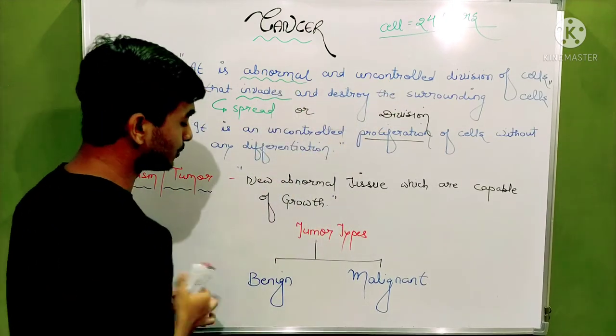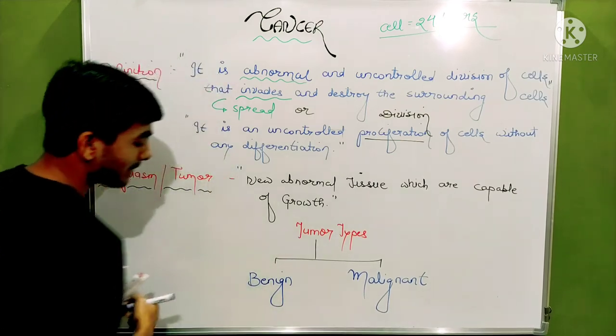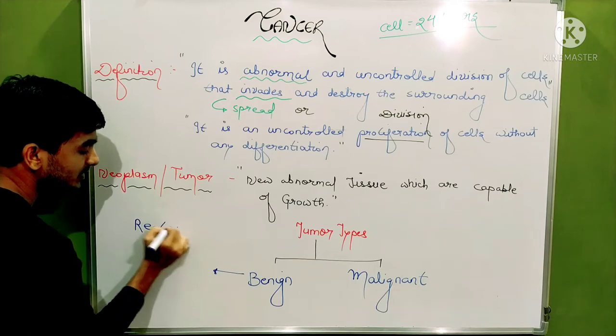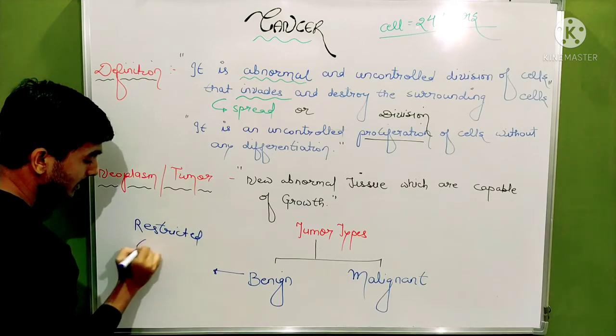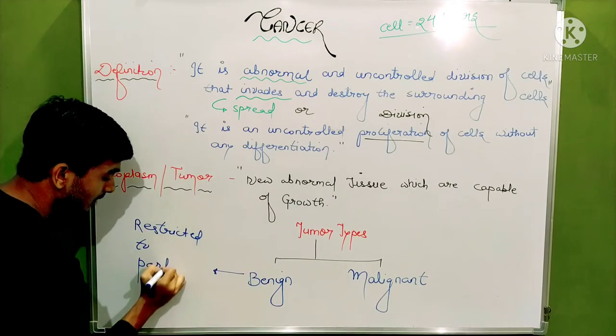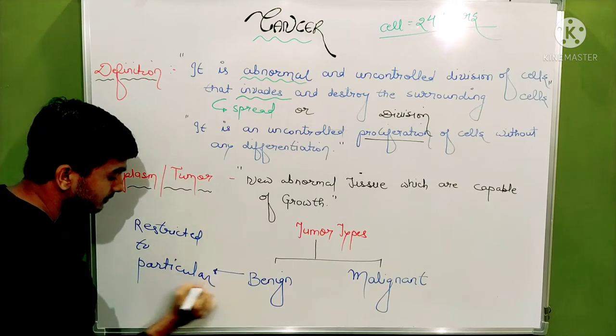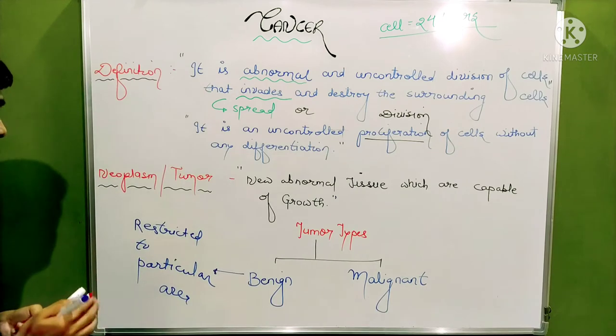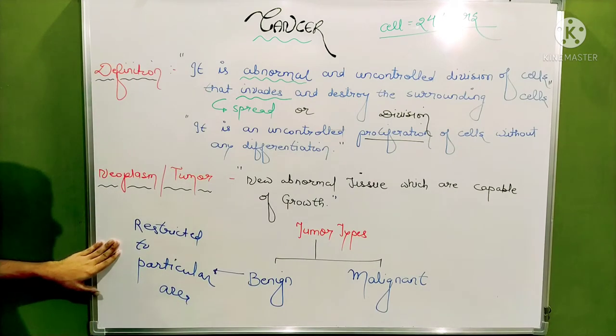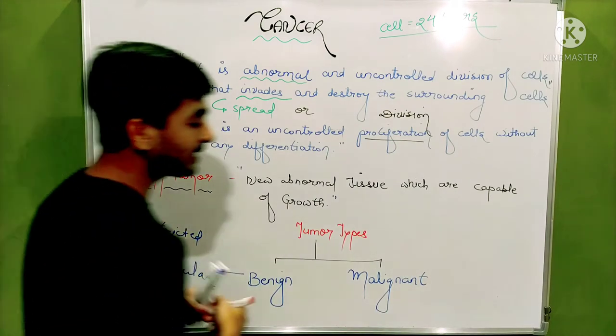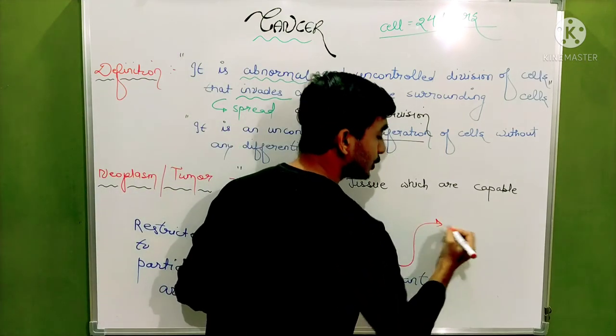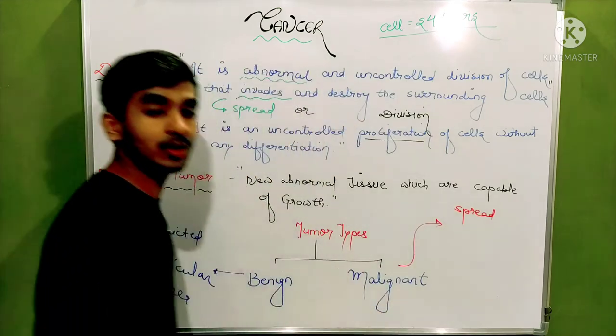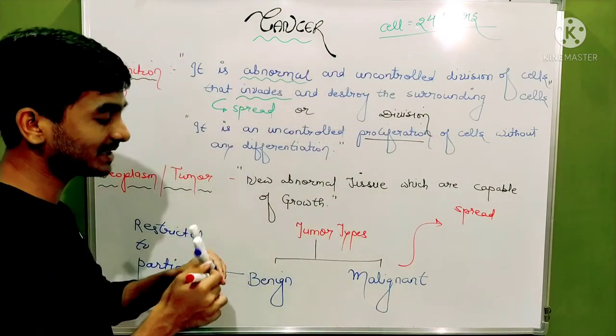There are two types of tumours: benign and malignant. Benign tumour means the tumour that is restricted to a particular area. Where the tumour started, it will try to locate at a particular region and would not spread to any other place. Malignant tumour spreads from its location to another location.